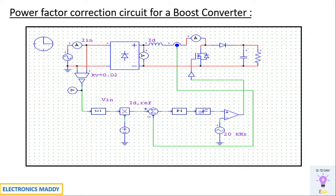We will always try to achieve unity power factor in practical applications, but not everywhere will we require a unity power factor circuit — there might be applications where you require some amount of reactive power. What we are trying to achieve is that the voltage and current should be in phase with each other: the voltage at this point and current flowing through the boost converter circuit should be in phase. We are building a circuit, taking the supply voltage, and synchronizing it with respect to the current flowing at this portion of the circuit.